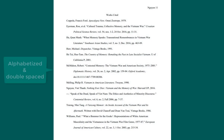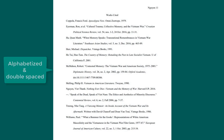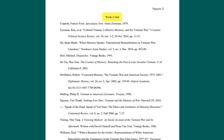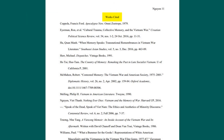The list of works cited appears at the end of the paper. This list should be alphabetized and double-spaced. Center the heading "Works Cited" an inch from the top of the page. If the list only contains one entry, make the heading "Work Cited." There should be a double space between the heading and the first entry.